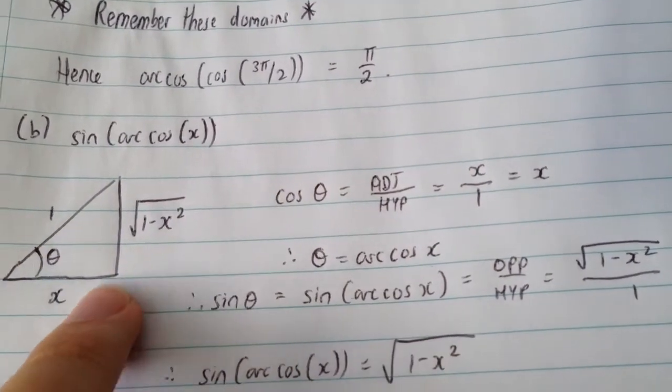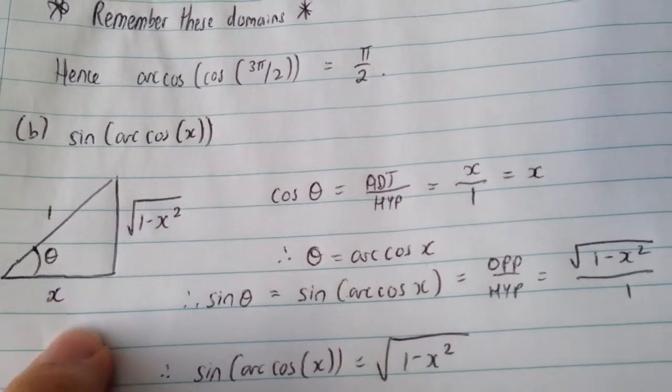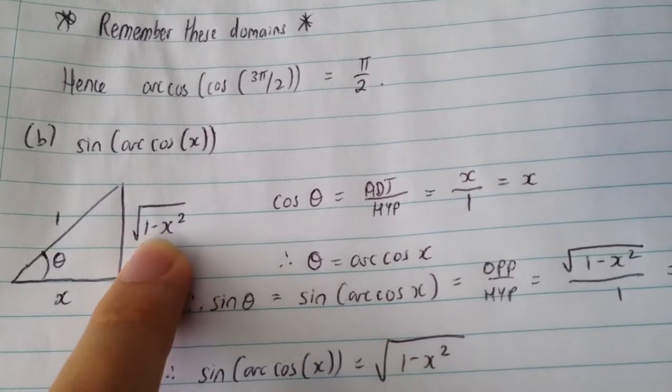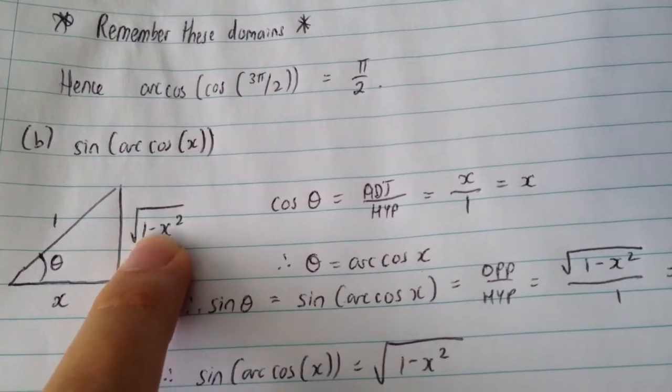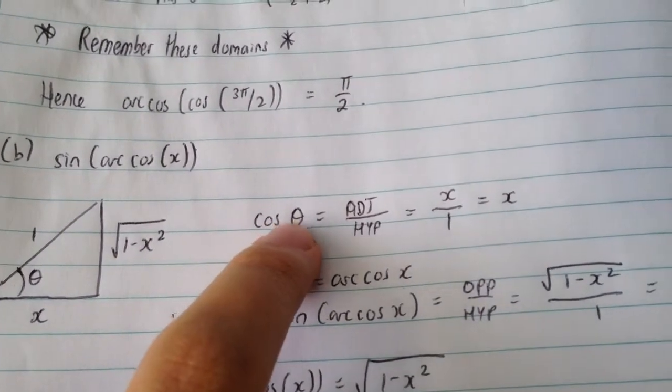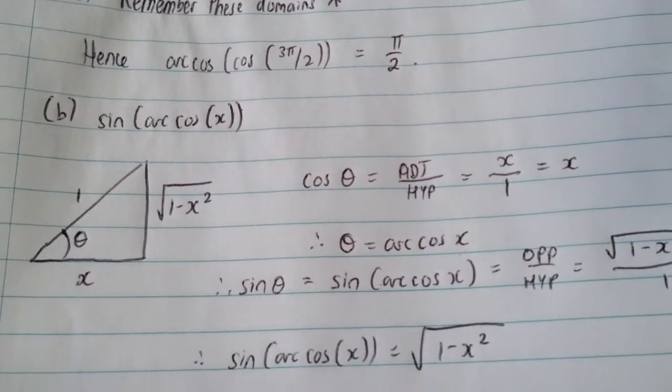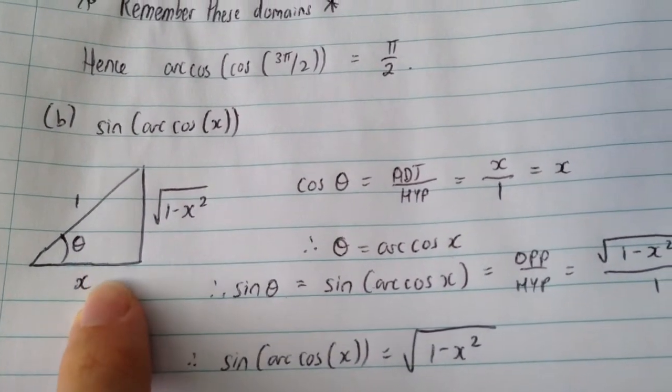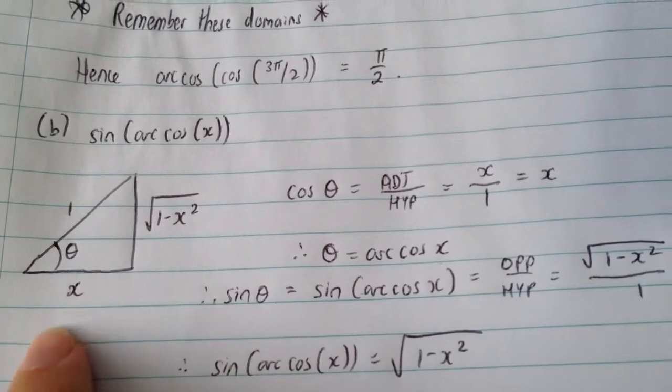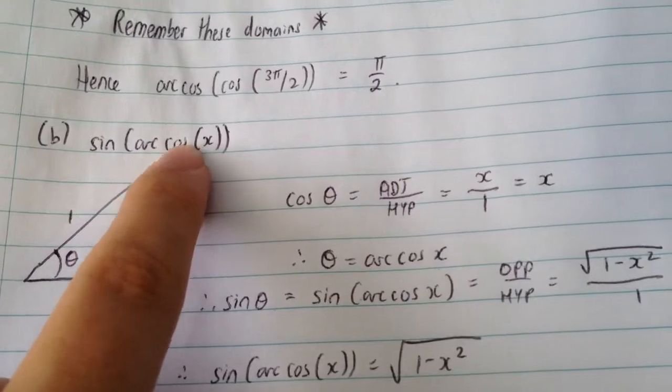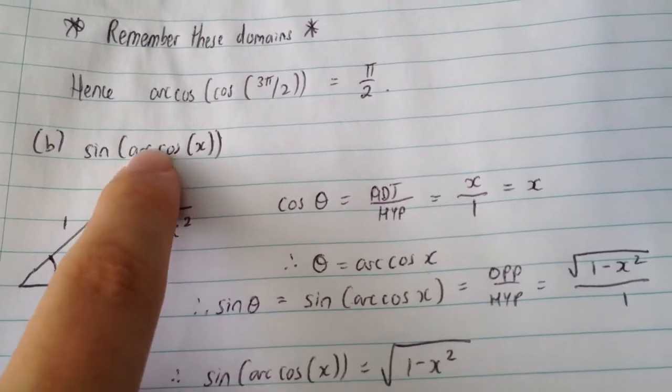But when we do that, obviously using Pythagoras theorem, if that side's 1, that side's x, and we're going to have square root of 1 minus x squared there. Again, that's just Pythagoras theorem. And we've got cosine theta is adjacent over hypotenuse. What's the adjacent side in this case? Well, it's clearly our x, and that's why we're considering x there being adjacent to that, because we have cosine here, and we know that adjacent over hypotenuse is cosine of theta.